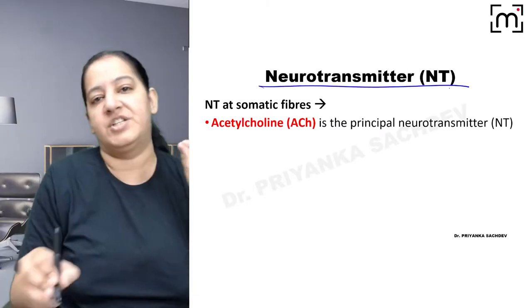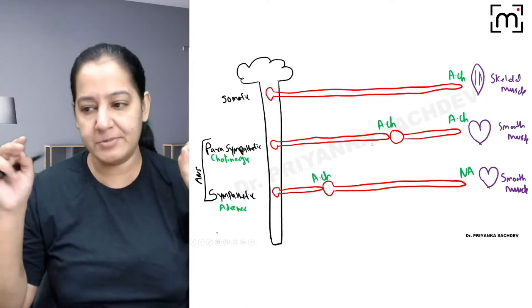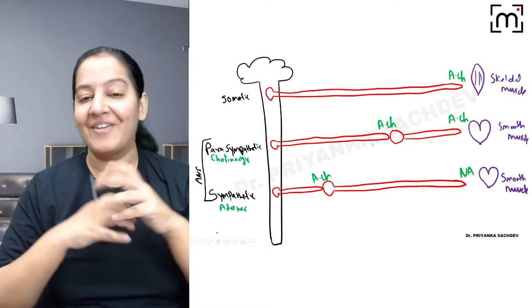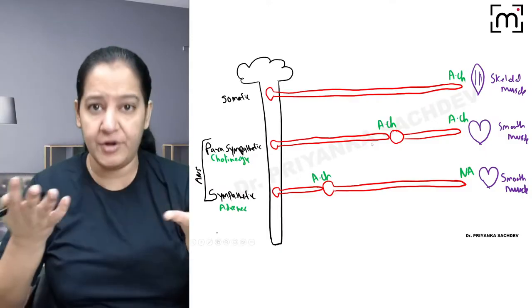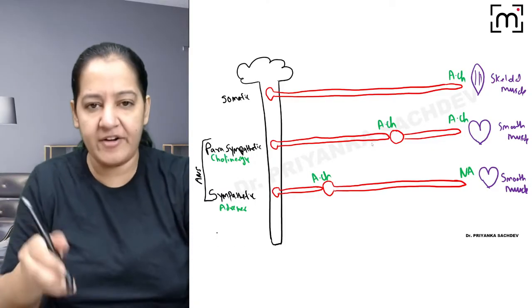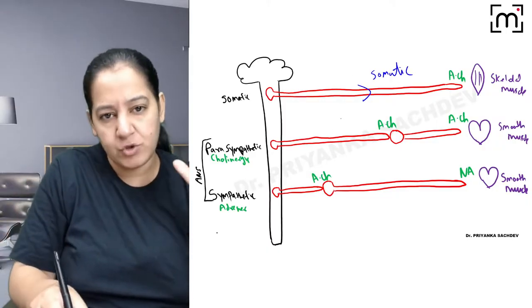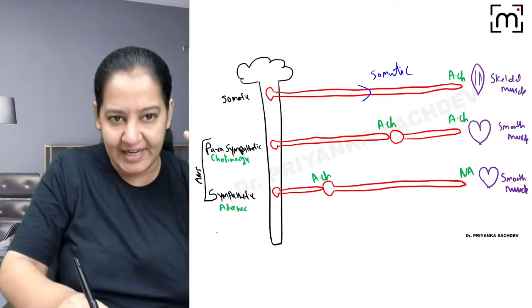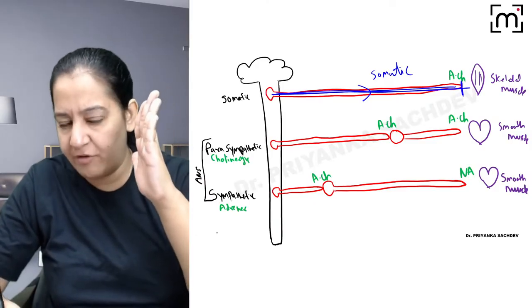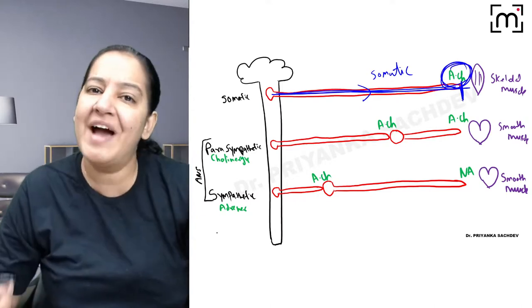Now coming to neurotransmitters. In the somatic system, there is only one neuron, so we require only one neurotransmitter at the level of the organ — that is acetylcholine. In the somatic system: one neuron, one neurotransmitter, acetylcholine. The signal starts from the CNS and at the level of the organ, the signal is given in the form of acetylcholine.